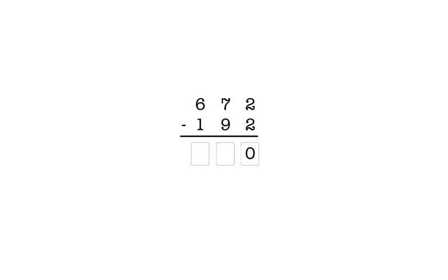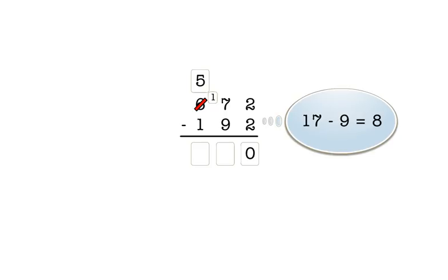In the tens column, we have seven minus nine. So we take a hundred from the hundreds column to make ten tens. We click on the six in the hundreds column to cross it out and enter a five above it. We enter a one here to show that the hundred became ten tens. In the tens column, we now have seventeen minus nine, which is eight. So we enter eight in the answer box for the tens column.